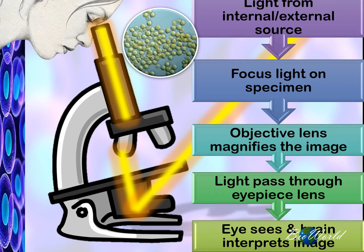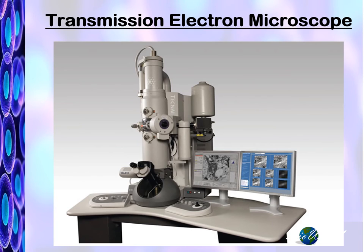So let's move on to discuss the electron microscope. There are actually two types of electron microscopes that we will talk about. We'll start first with the transmission electron microscope. This microscope has an electron gun at the top.